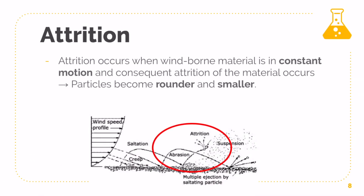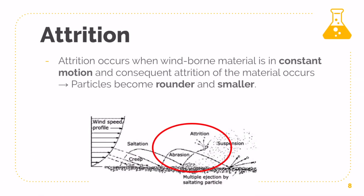Attrition is very simple. It occurs when your wind-borne material is in constant motion and they start to bang into each other. As they bang into each other, they become even smaller. This is a form of erosion — erosion is essentially when anything big becomes small. As a result, your particles will actually become rounder and smaller. That is what attrition is all about.